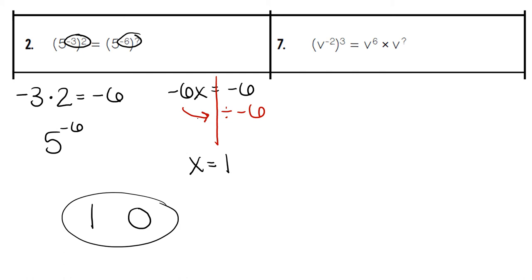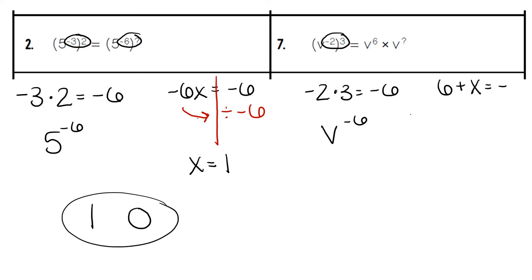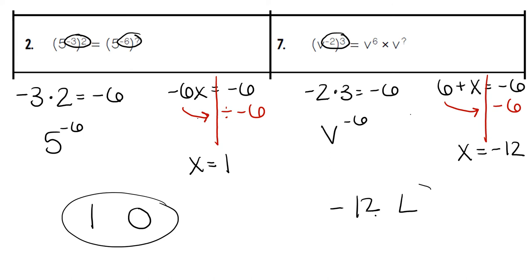For number 7, we start off by multiplying our exponents: negative 2 times 3, which gives us a negative 6. V to the negative 6th power is our answer. On the other side, we're adding our exponents because it's a multiplication problem: 6 plus what gives us negative 6? We do the opposite — instead of plus 6, we do minus 6. Negative 6 minus 6 gives us a negative 12. Negative 12 is our missing exponent, represented by the letter L at the bottom.